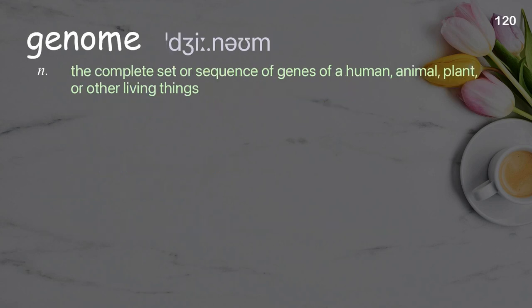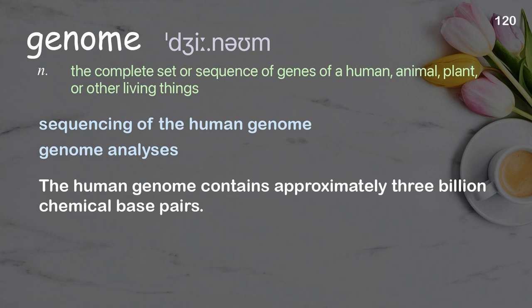Genome: the complete set or sequence of genes of a human, animal, plant, or other living thing. Examples: sequencing of the human genome, genome analyses. The human genome contains approximately 3 billion chemical base pairs.